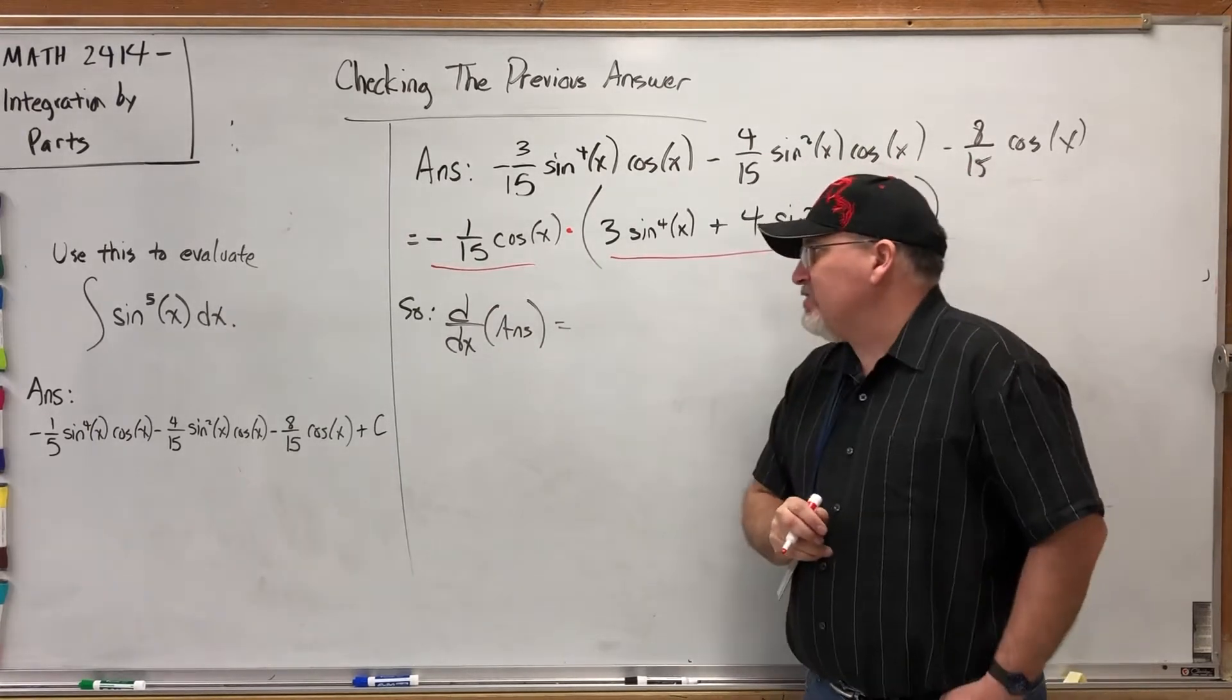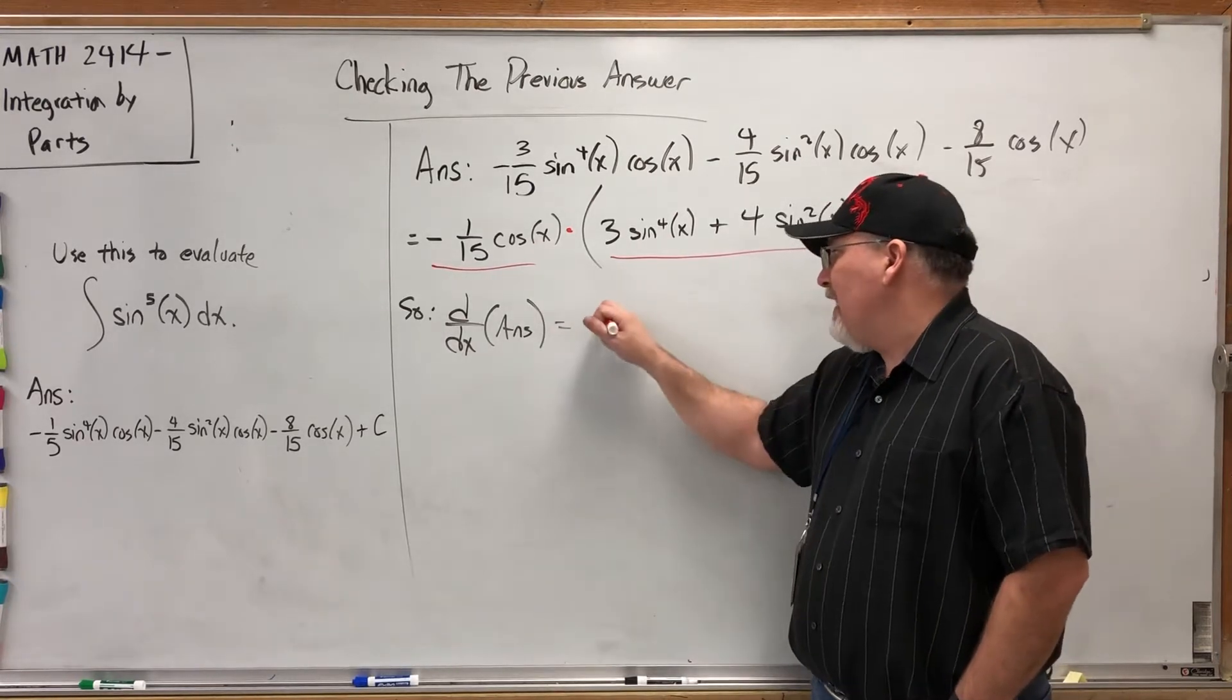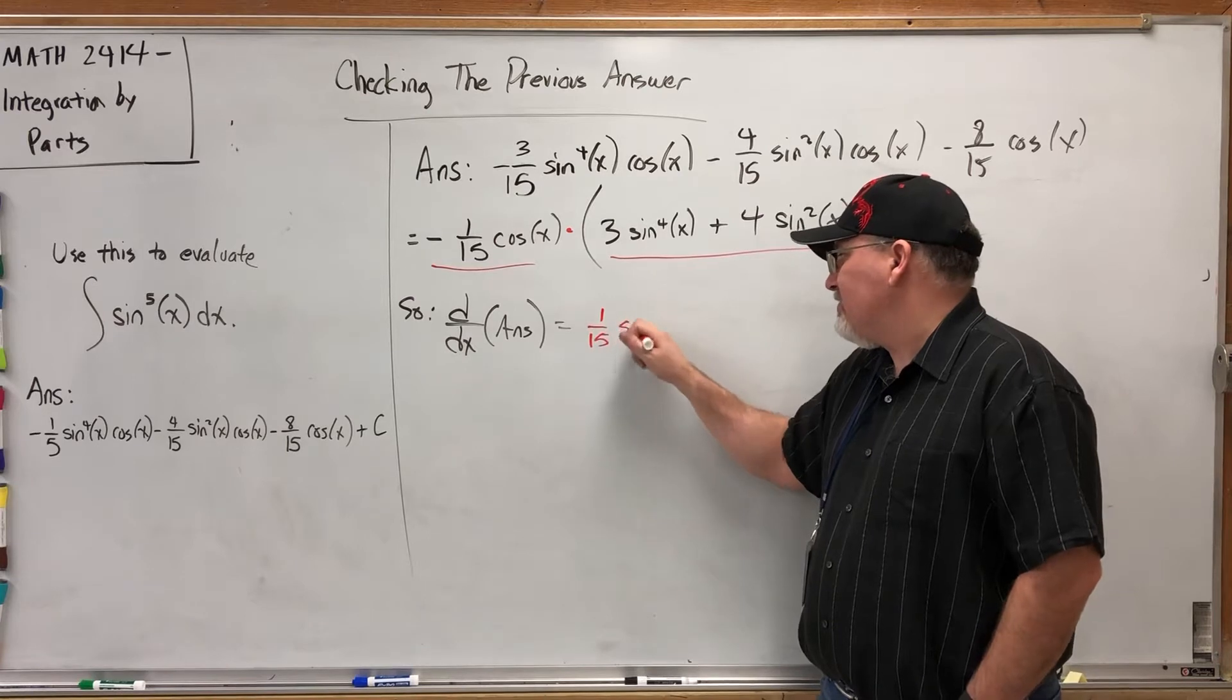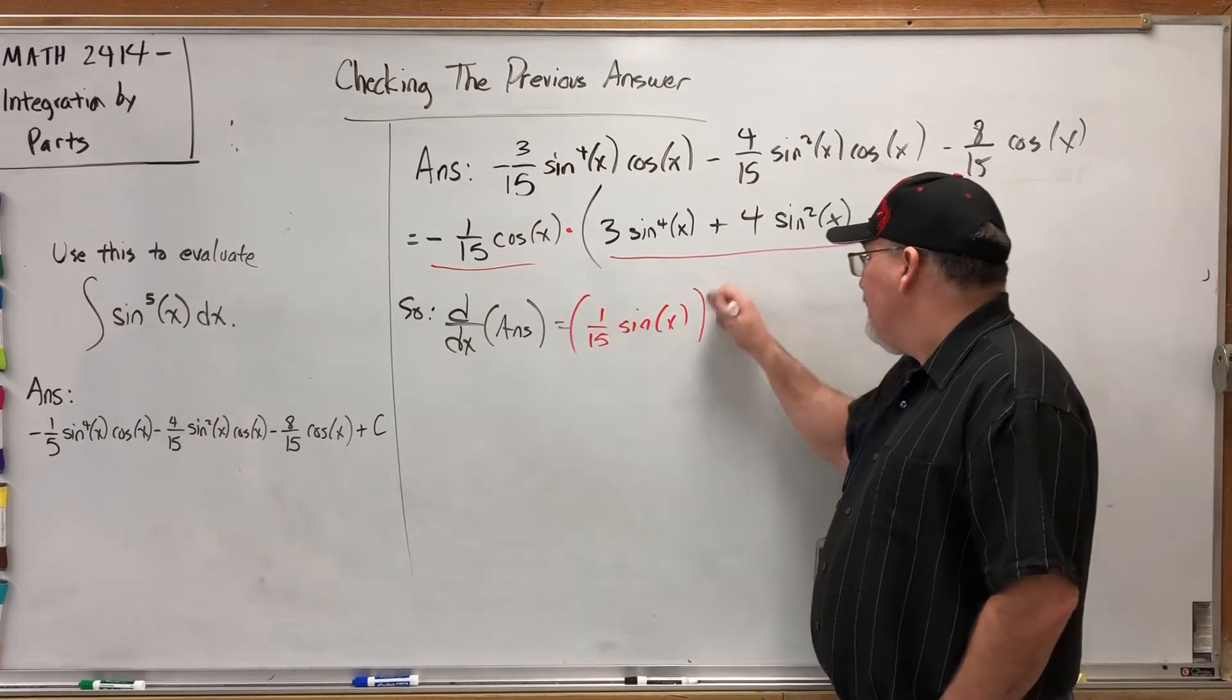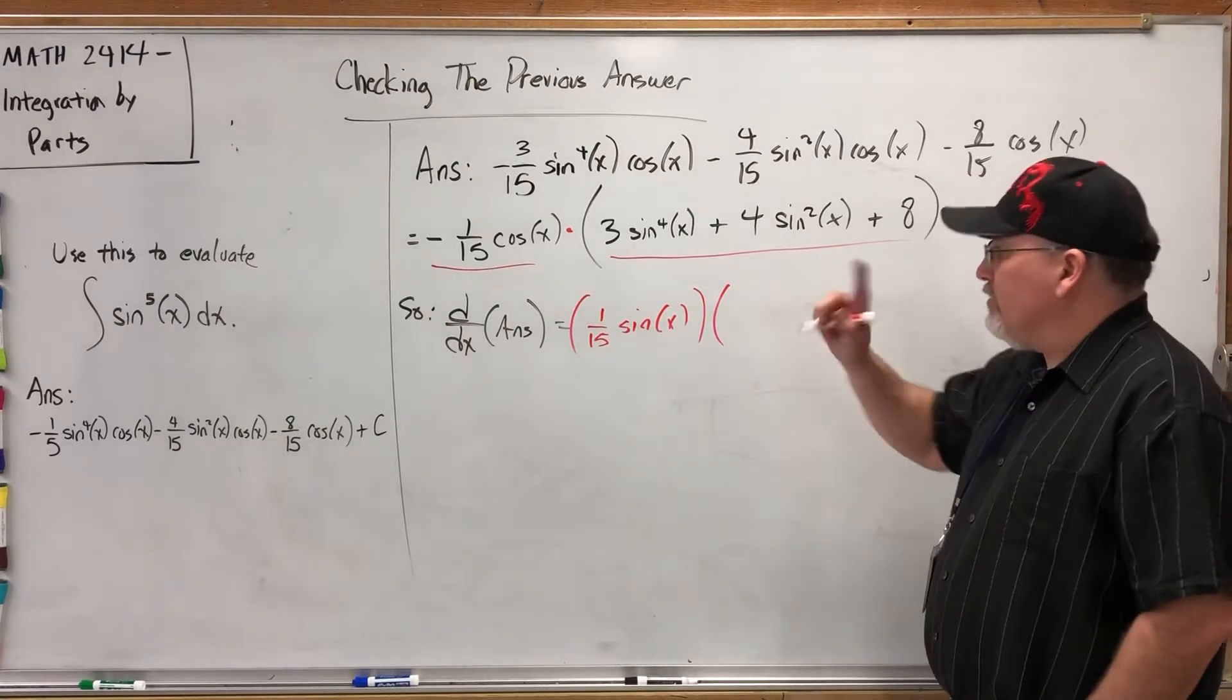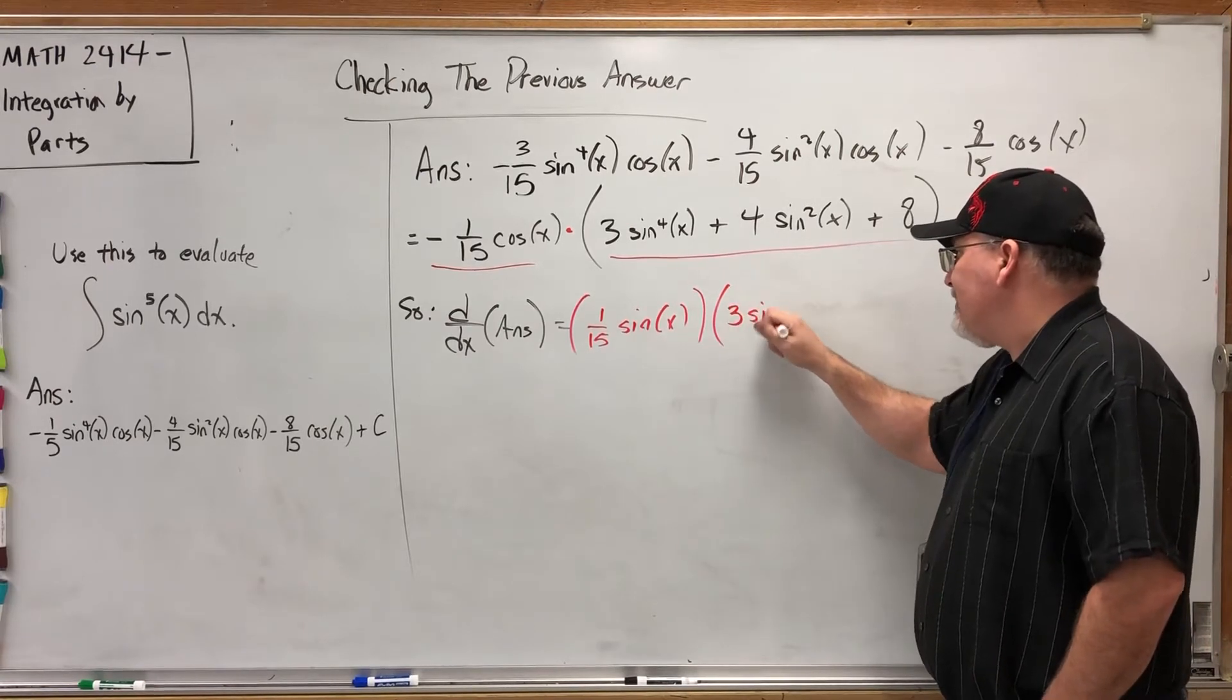So how does the product rule go? Derivative of the first. Here's the first, here's the second. For the derivative of negative one-fifteenth cosine of X, the derivative of cosine is negative sine, so that will change to positive one-fifteenth. And of course, the derivative of cosine is negative sine, so it becomes sine.